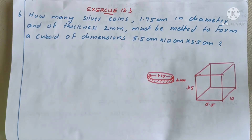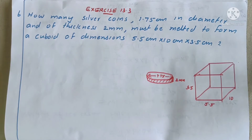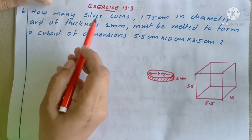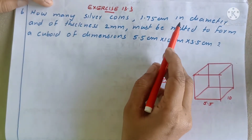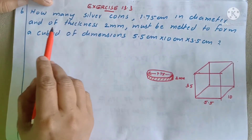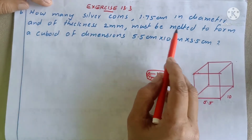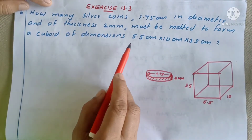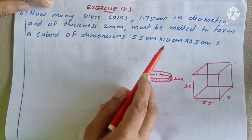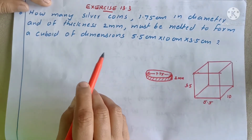Dear children, in the next exercise 13-3, 6th question. How many silver coins 1.75 cm in diameter and 2 mm thickness must be melted to form a cuboid of dimension 5.5 cm × 10 cm × 3.5 cm.